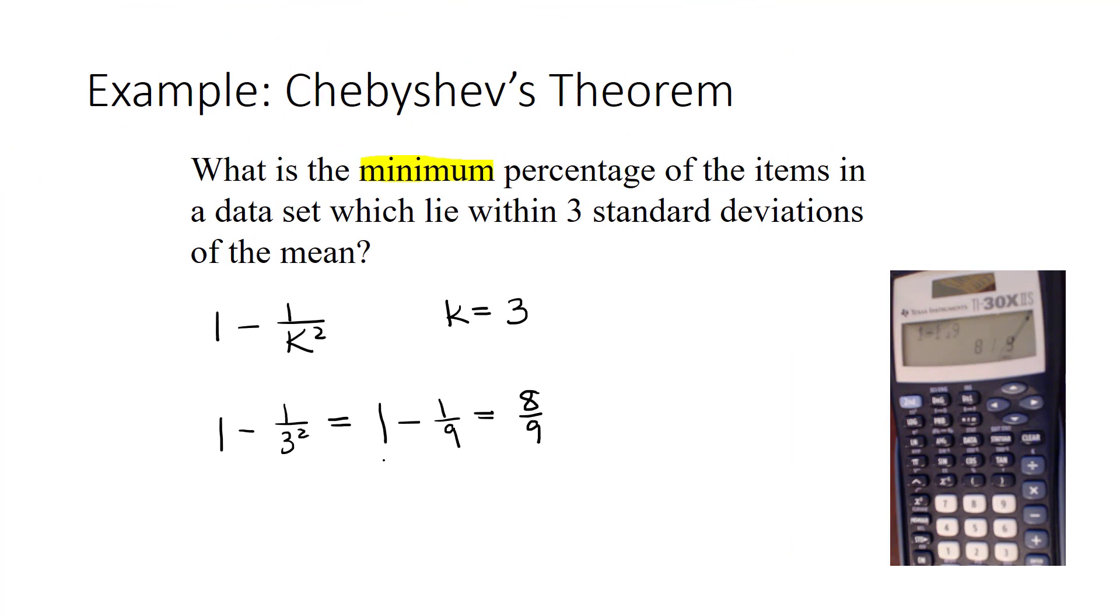By hand, you would convert 1 to the form 9 over 9, and subtract 1 over 9, and we would have 8 ninths that way as well.